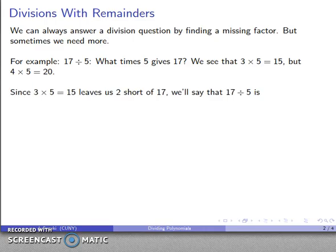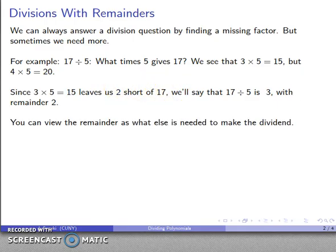We might look at it this way: 3 times 5 gives us 15, which is close to what we want but too short. What I need is three fives and two more. I can interpret that by saying that 17 divided by 5 is 3—that's how many fives I need—but then there's a remainder, this additional bit of 2 that I need to make 17. I can think about the remainder as the additional amount needed to make up the dividend, and we can apply this to polynomial quotients.